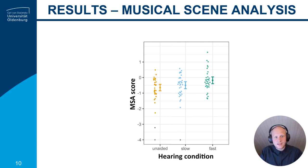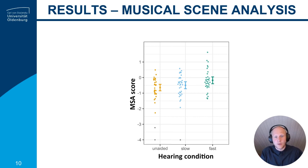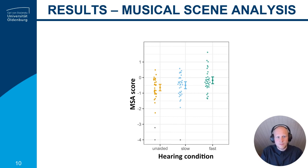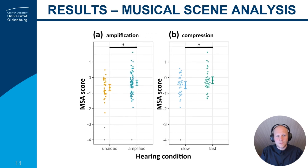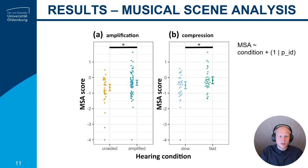We could see that our subjects performed worst in the unaided condition, followed by the slow compression approach, while participants performed best with the fast compression approach — meaning fast compression made it easiest for individuals to hear out a specific instrument from a mixture. Using contrasts within a mixed effects model, we confirmed that both the effect of compression and the combined effect of amplification are significant.